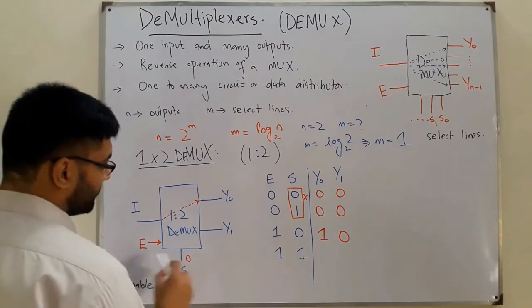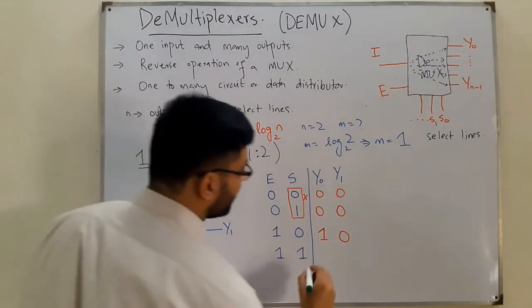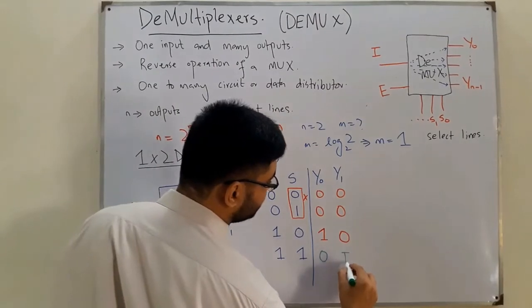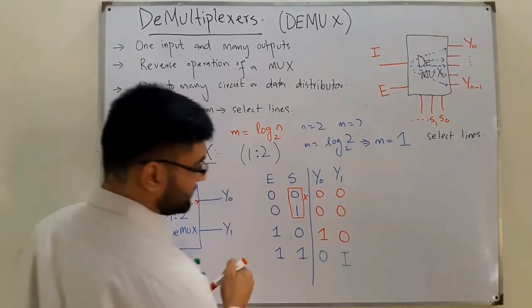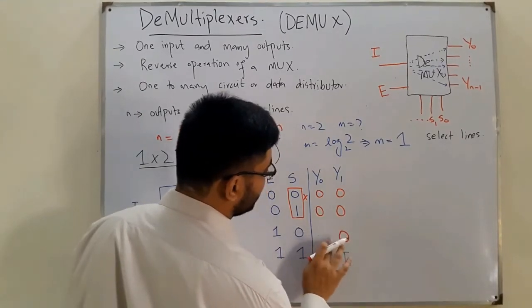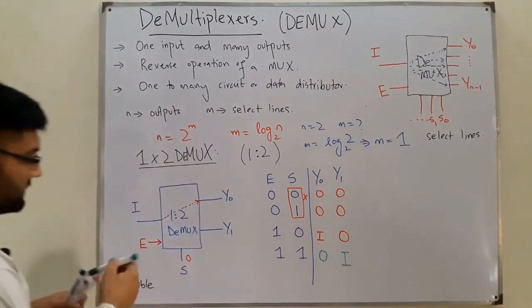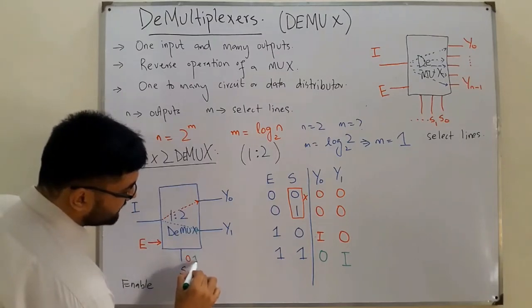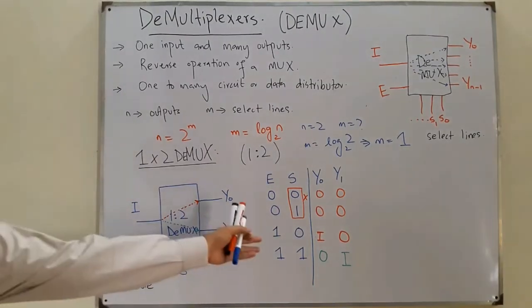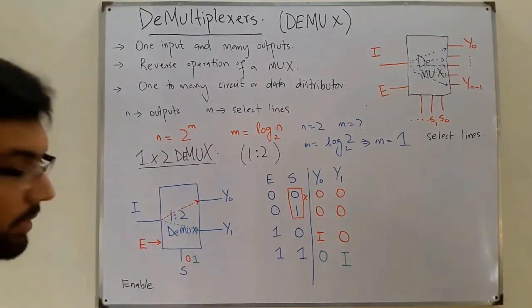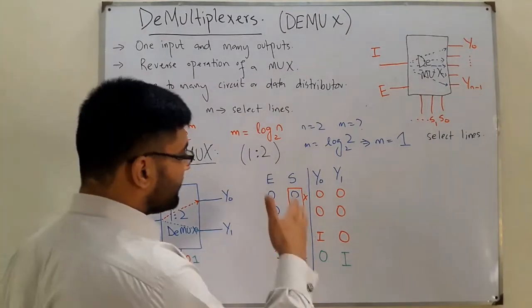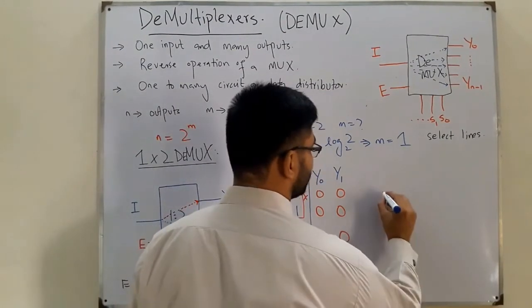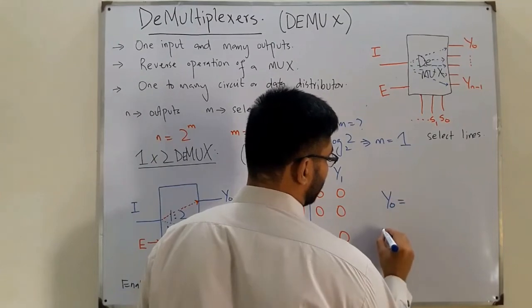When enable is one and S=1: Y₀=0 and Y₁=I, meaning the input is connected to Y₁. So the select line determines which output line the input is routed to. Now let's write the Boolean expressions and draw the logic diagram.